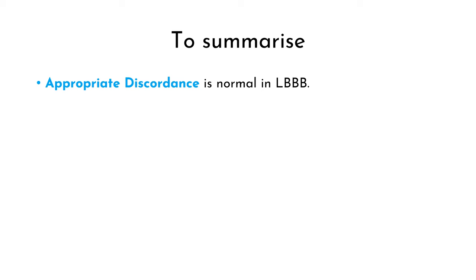Let us quickly recap how we can derive the Sgarbossa Criteria. We know that appropriate discordance is a feature of LBBB, which means the three things we should never see in LBBB are concordant ST elevation, concordant ST depression, and excessively discordant ST elevation — now defined as an ST elevation which is 25% or more of the preceding S wave amplitude. ST elevations are looked for in all leads whereas ST depressions are only looked for in V1 to V3 because we are looking for posterior wall MI. 1 mm of ST deviation in a single lead is sufficient to fulfill the criteria. That's all for today.